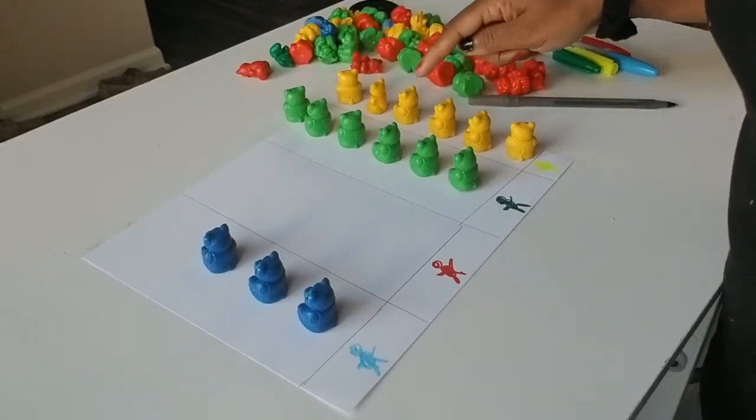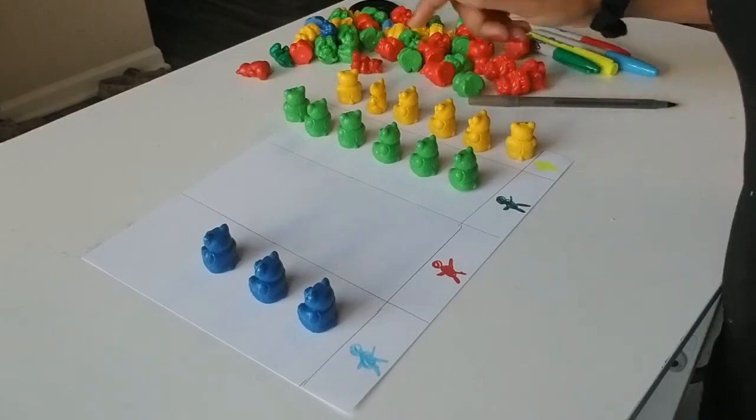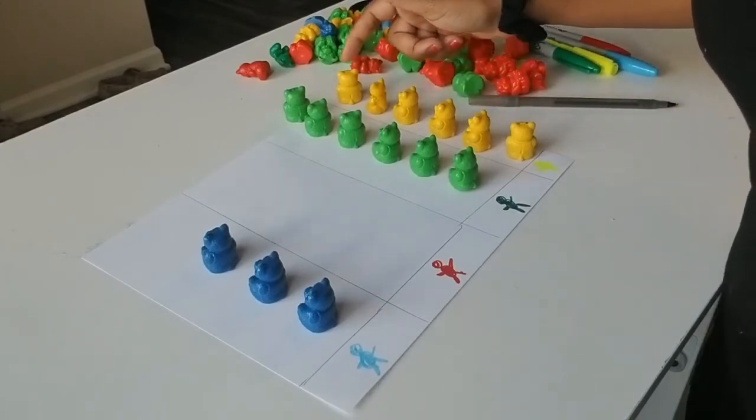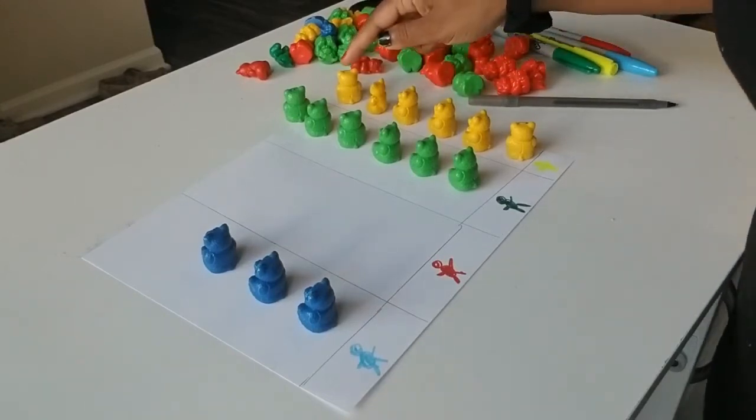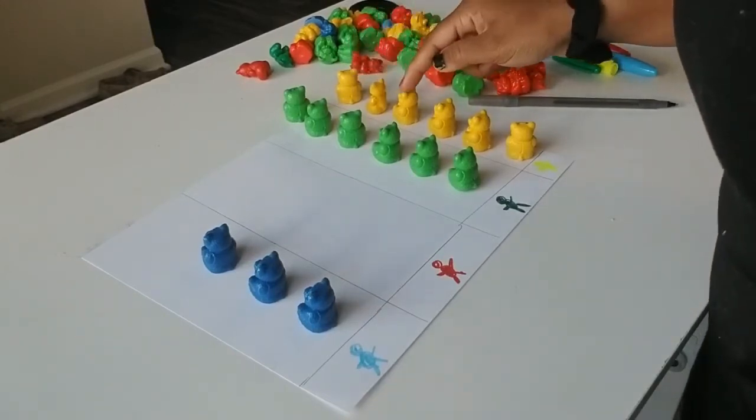And touching the bears as they're counting, because some children go one, two, three, four, five, six. That's not correct. You need to make sure the child is touching each bear as they are counting them.